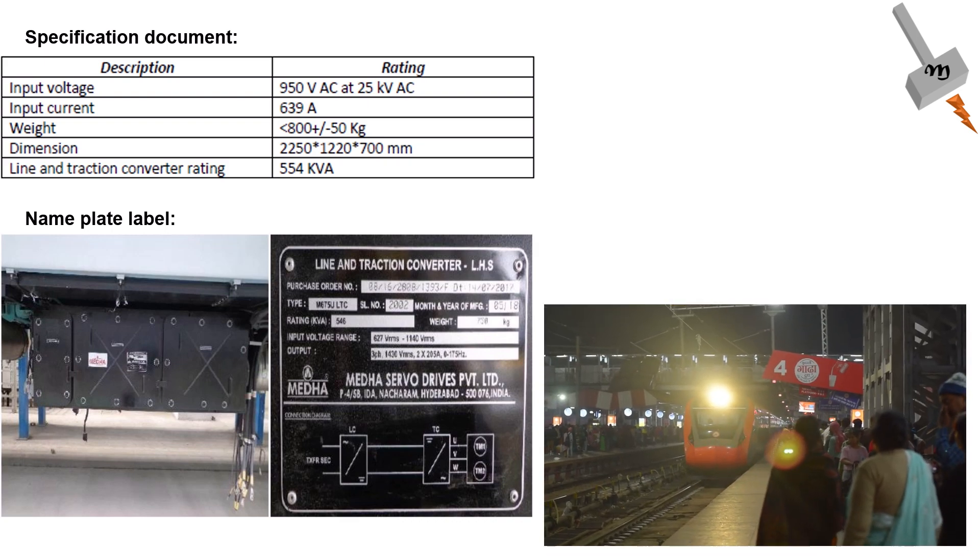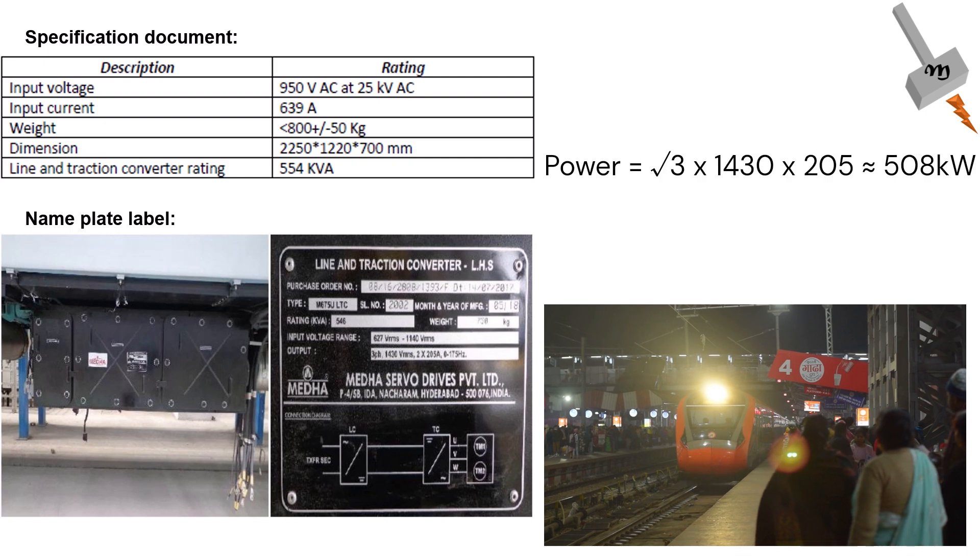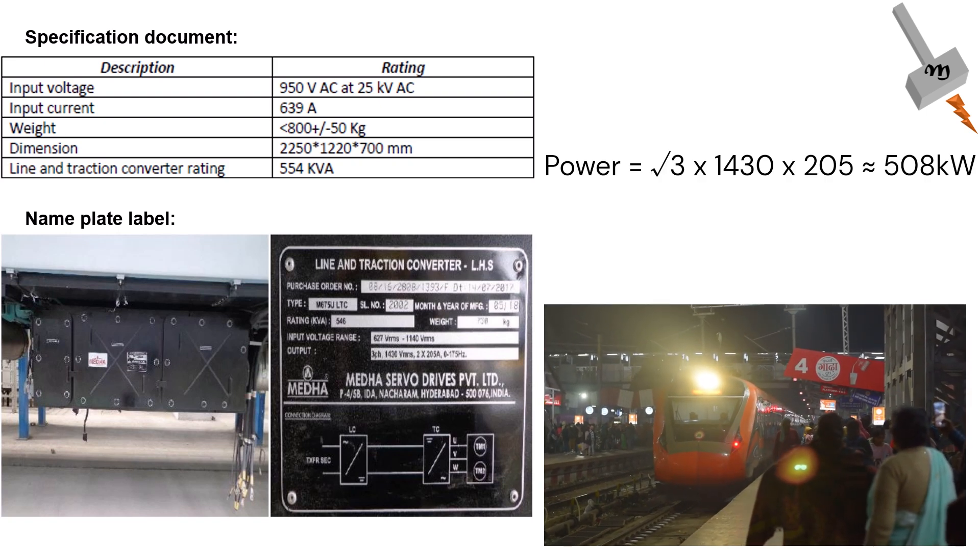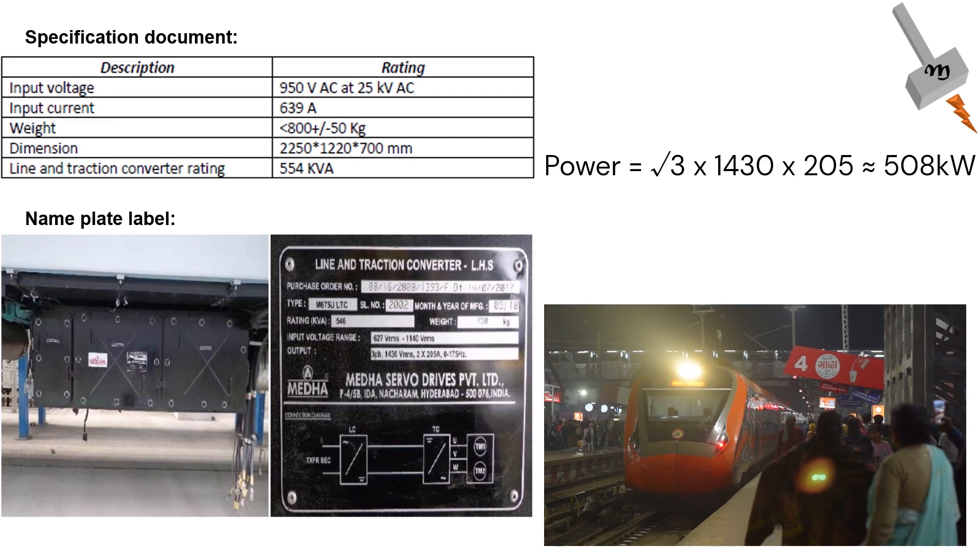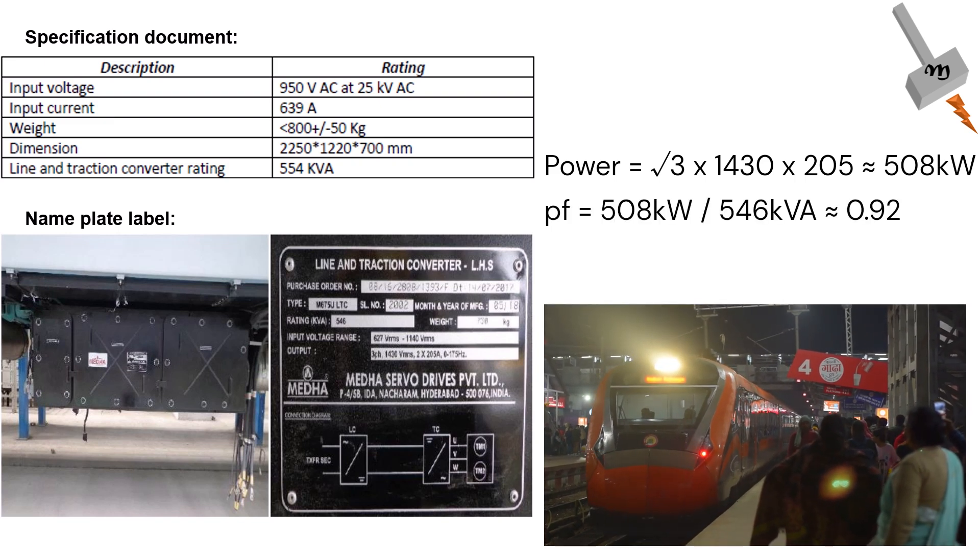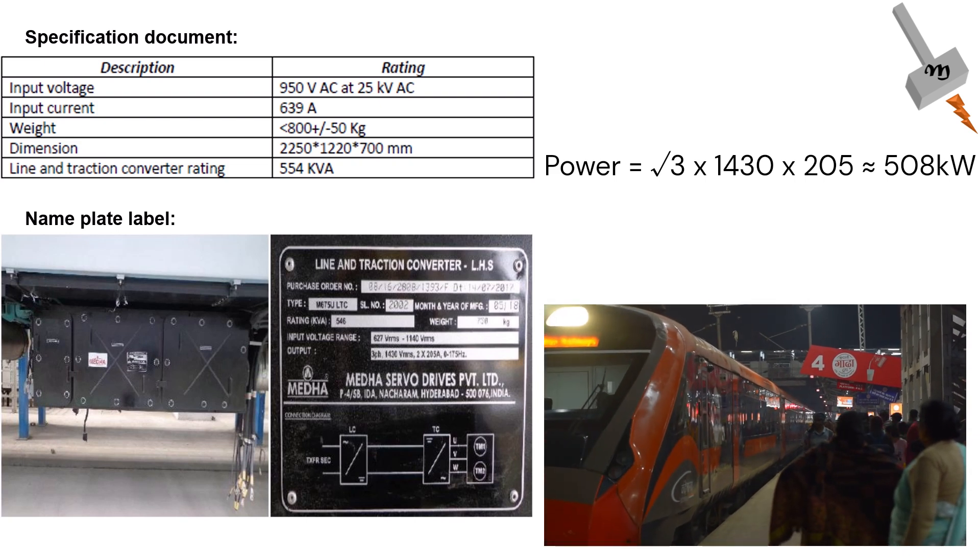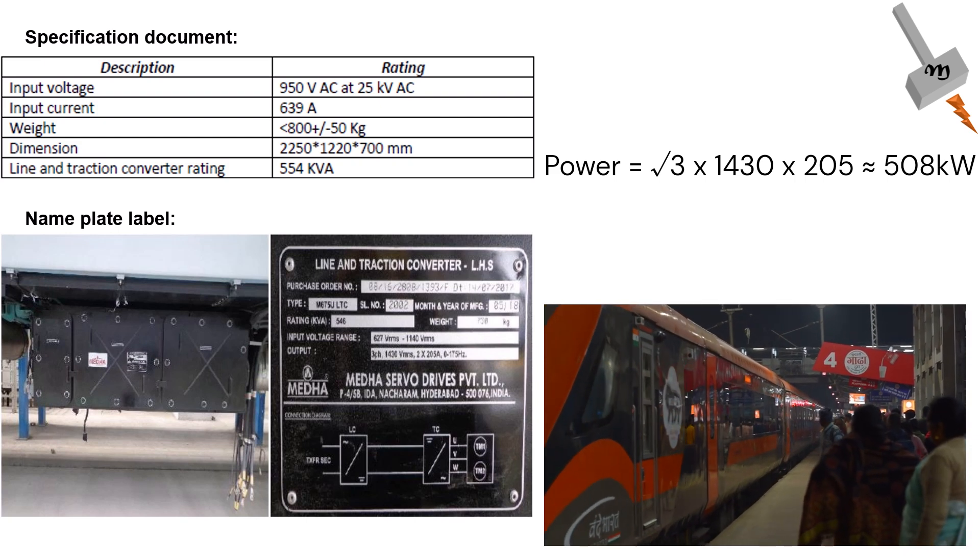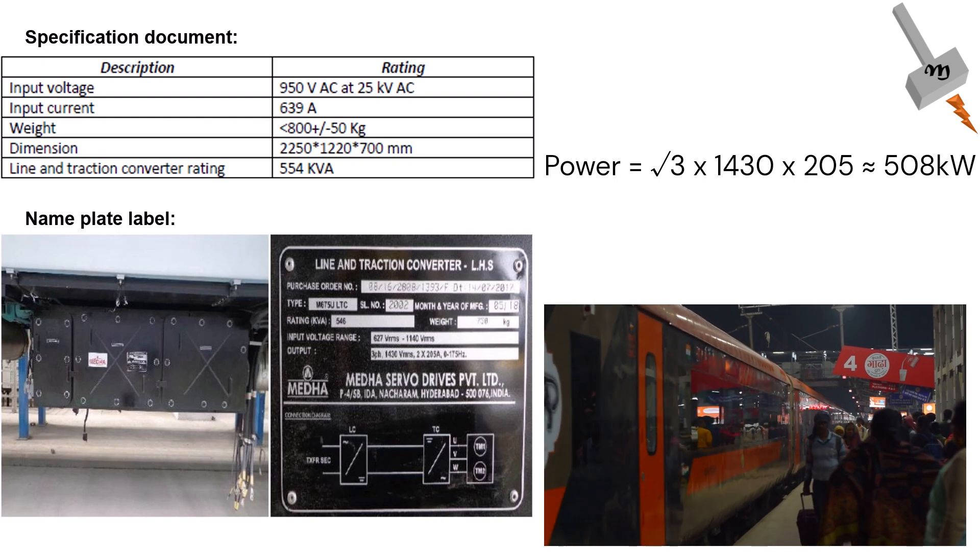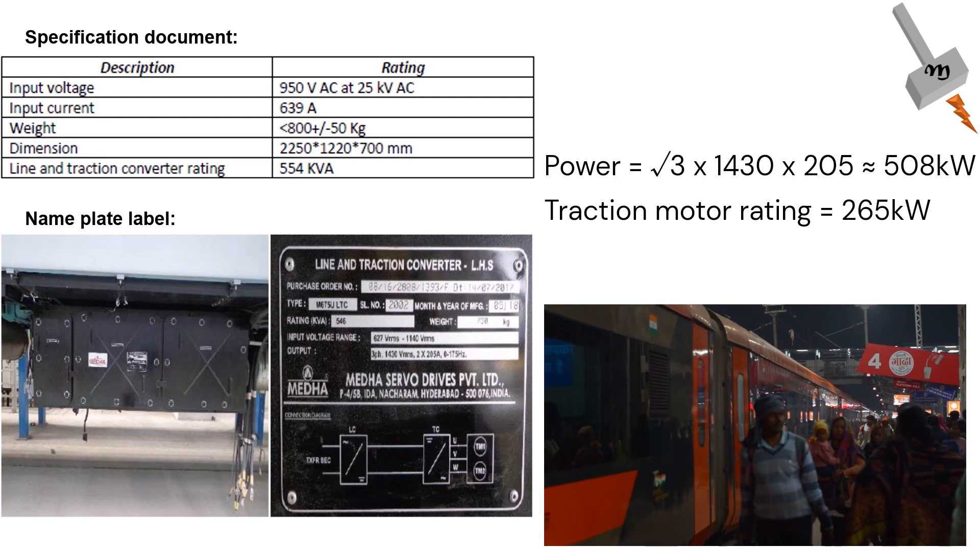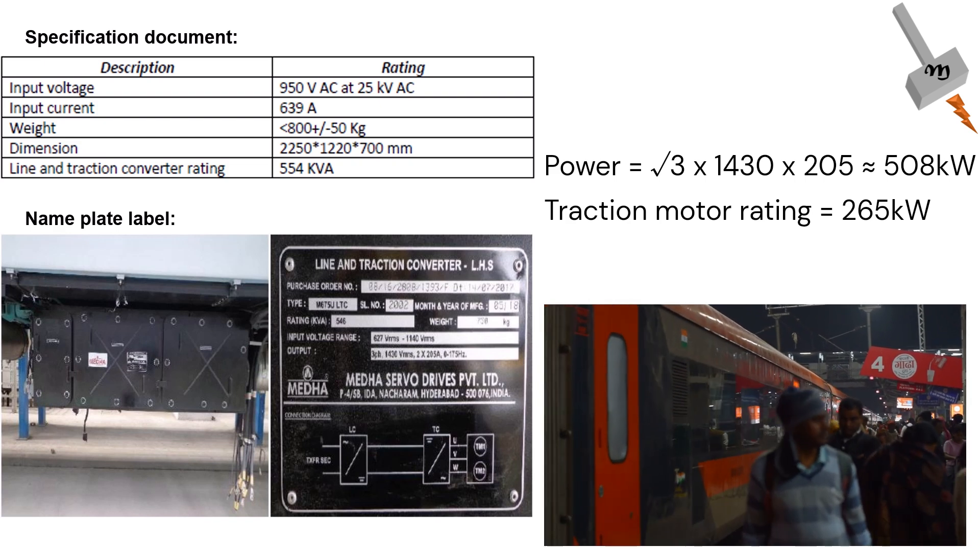Also, we would try to calculate the power at the output side of the converter. Root 3 times line voltage and line current gives us 508 kW, which if we divide by the kVA rating of the converter, we get 0.92 as the power factor at full load. Each traction converter of Vande Bharat chair car supplies power to 2 traction motors, which roughly matches since the traction motor rating of version 1 Vande Bharat is 265 kW.